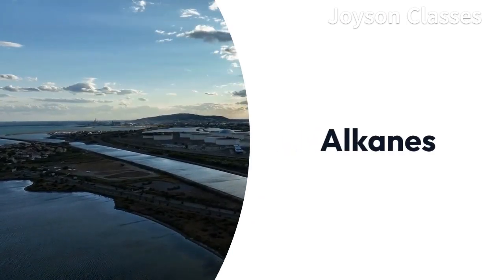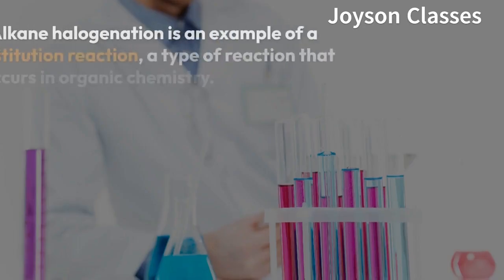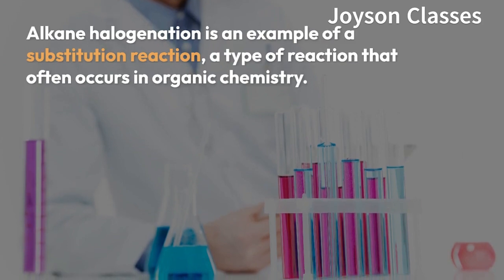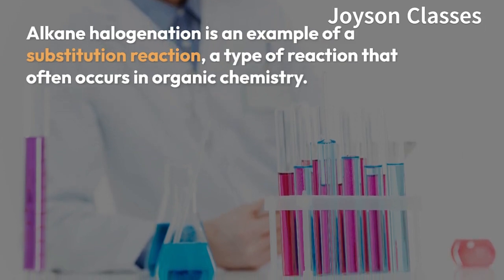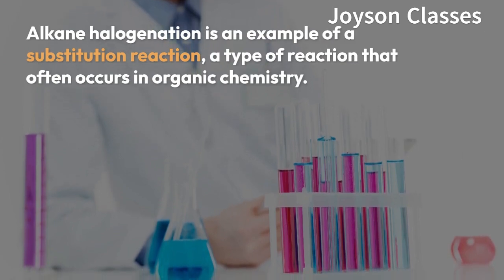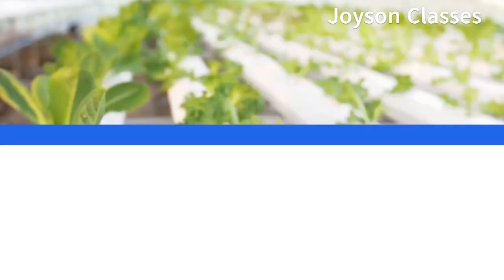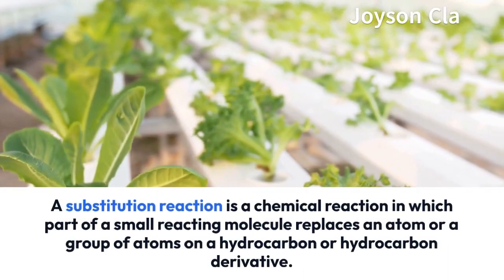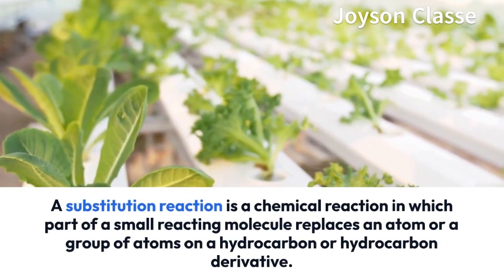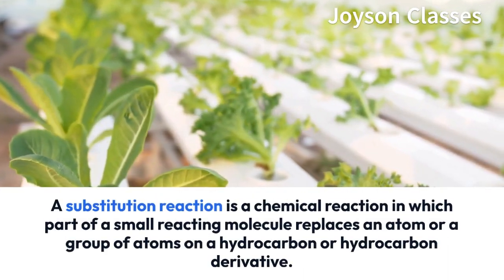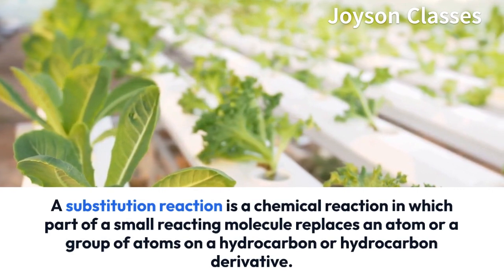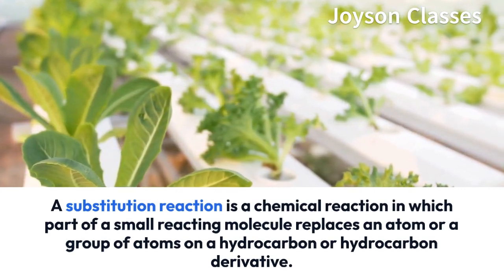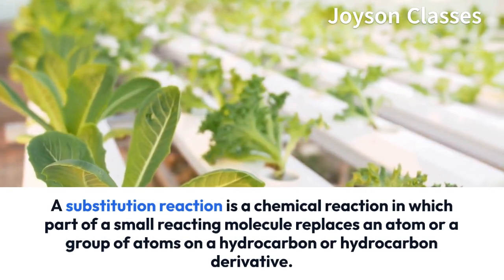Alkane halogenation is an example of a substitution reaction, a type of reaction that often occurs in organic chemistry. A substitution reaction is a chemical reaction in which part of a small reacting molecule replaces an atom or a group of atoms on a hydrocarbon or hydrocarbon derivative.